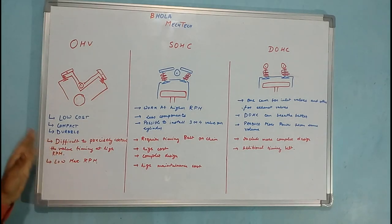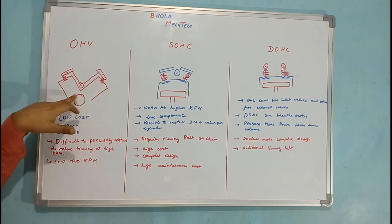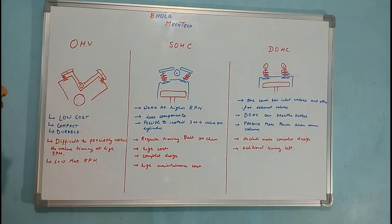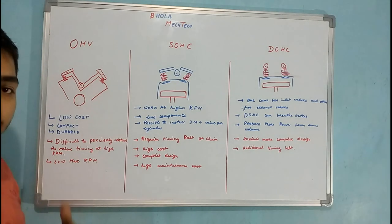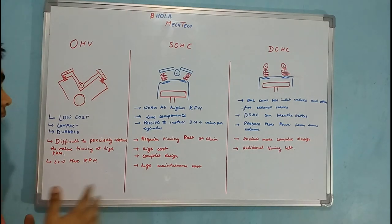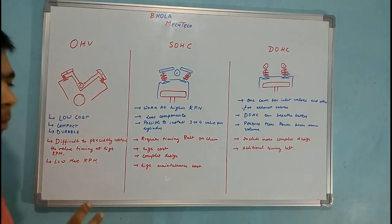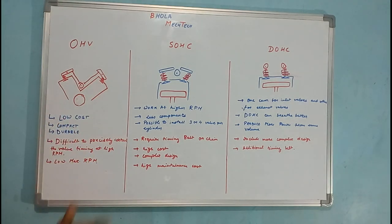The major disadvantages are that it is difficult to precisely control the valve timing at higher RPM. There are so many components — the crankshaft connects to the camshaft by gear, then there is the push rod, rocker arm, and valve. As the number of components increases, the inertia due to these components also increases. At higher RPMs the inertia will be much higher, making it difficult to control these components, resulting in a low maximum RPM.